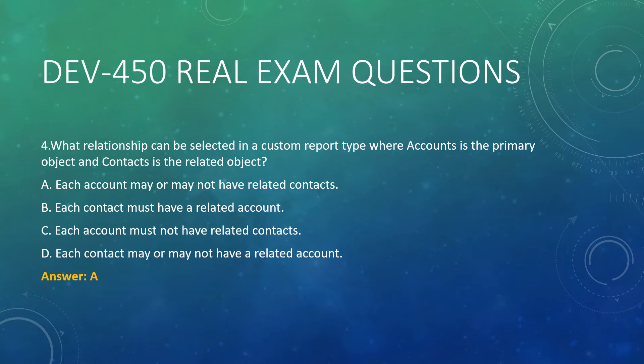Question 4. What relationship can be selected in a custom report type where Accounts is the primary object and Contacts is the related object? A. Each account may or may not have related contacts. B. Each contact must have a related account. C. Each account must not have related contacts. D. Each contact may or may not have a related account. Answer: A.